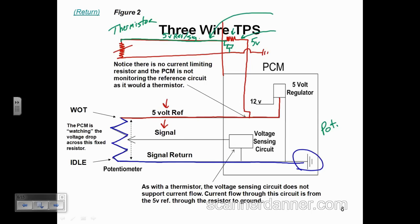There's a term called signal return. Signal return is another name for a sensor ground — you want to remember this for the test. When you're looking at a wiring diagram, you may not be sure which wire is the signal wire, and this signal return designation can make you think that's the signal wire — it is not. There are other names for sensor grounds: signal return is one, and another would be reference low.